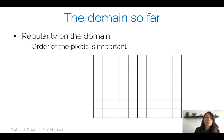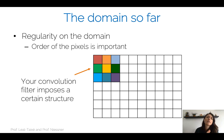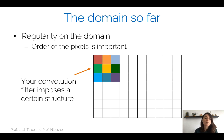Why am I mentioning this? When we apply convolutions on top of an image — when we train a convolutional neural network — what we do with each convolution filter is slide it through the image. This filter has a certain shape and therefore imposes a certain structure. The relationship of the weights, depicted in different colors, is always the same. We can do this because our image domain is actually regular.